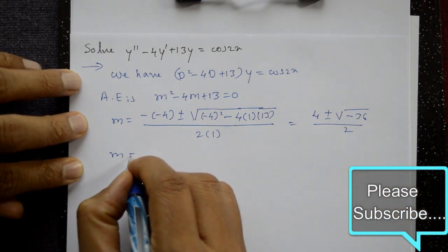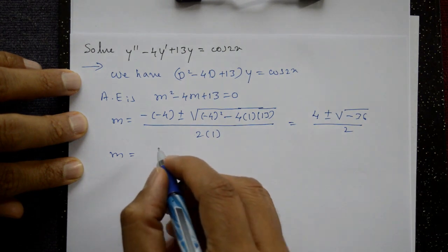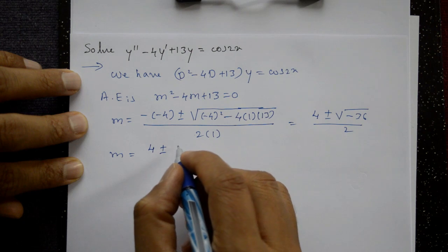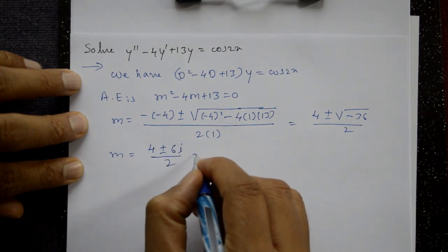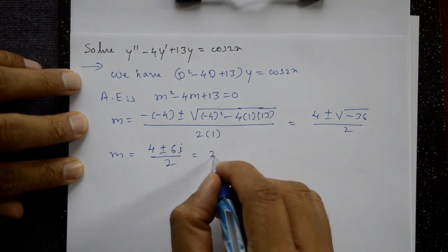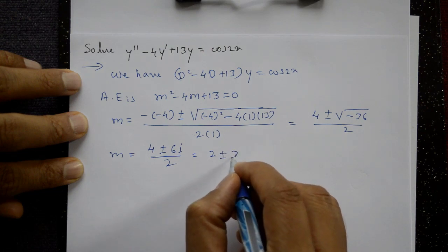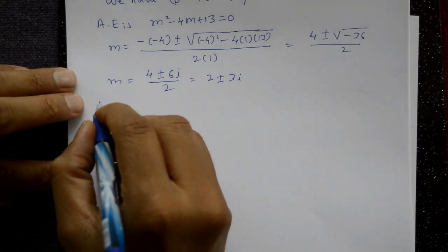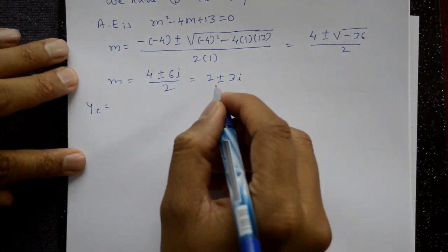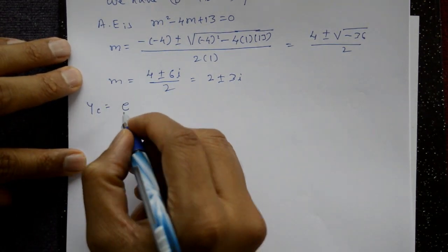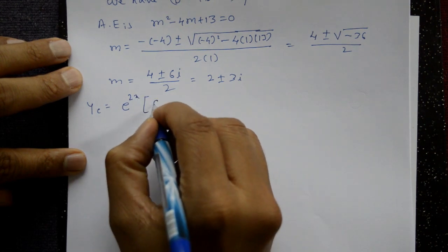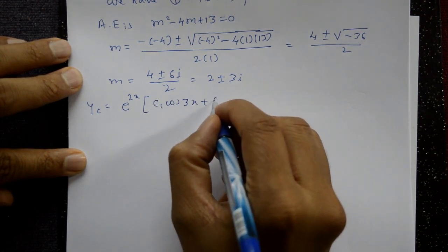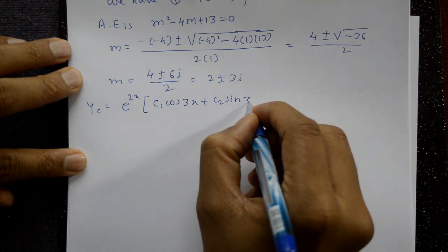This gives m = (4 ± √(-36)) / 2 = (4 ± 6i) / 2. Taking 2 as common: m = 2 ± 3i. The complementary function is CF = e^(2x) · (c₁ cos 3x + c₂ sin 3x).